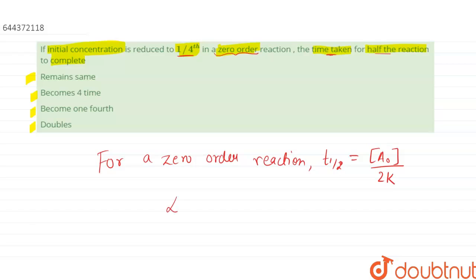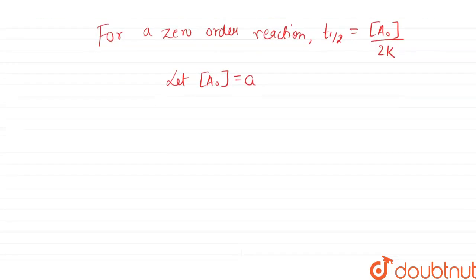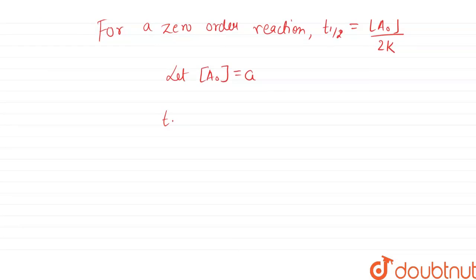So let us say let the initial concentration equals to A. So our T half will become T half equals to A by 2k. Let us say this is our equation number 1.